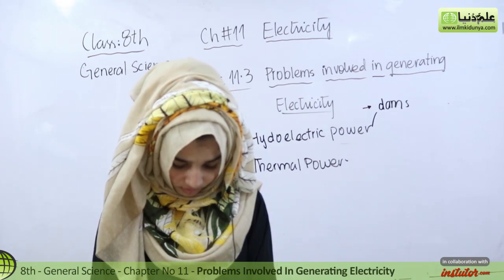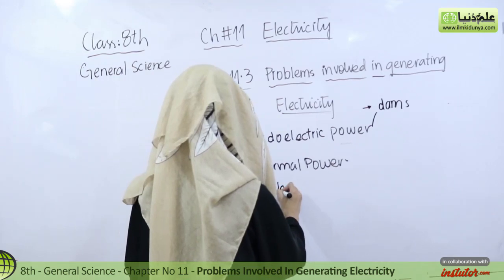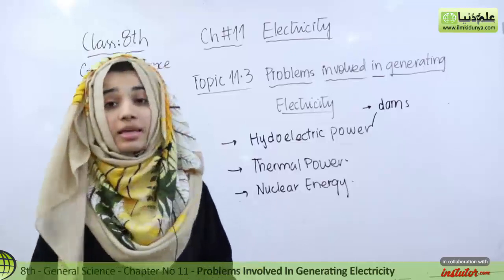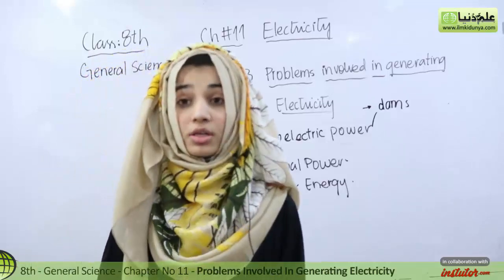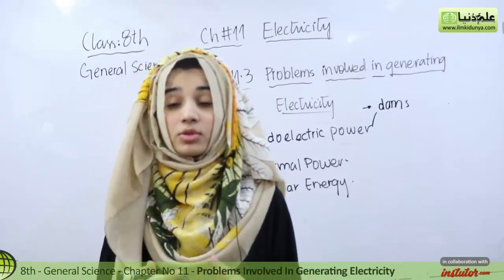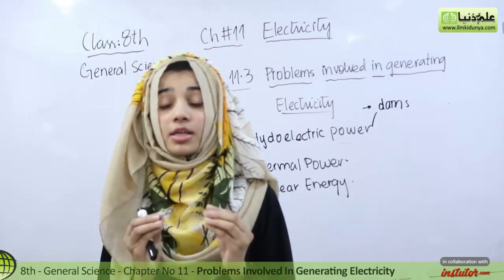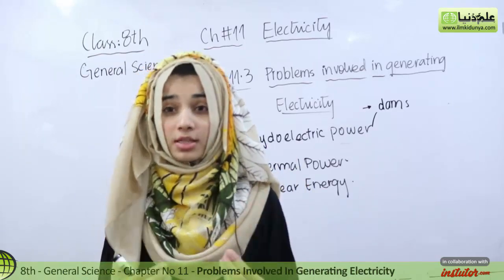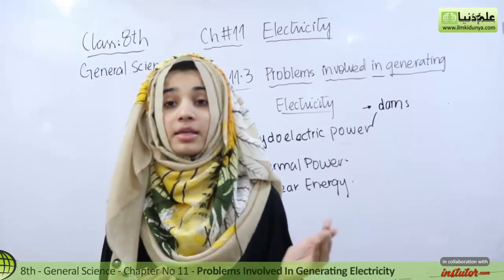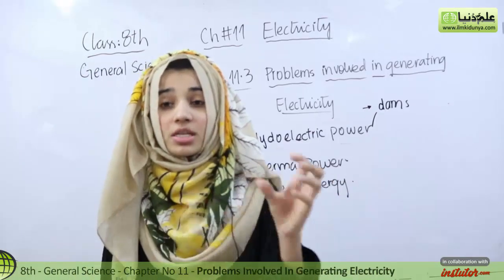Next, we have nuclear energy. Nuclear energy — what we do is use nuclear power. When we break the nucleus, it produces radiation from the nucleus with very high energy, and we produce electricity from that energy. But the radiation produced is dangerous — if radiation enters the body, it is very harmful.